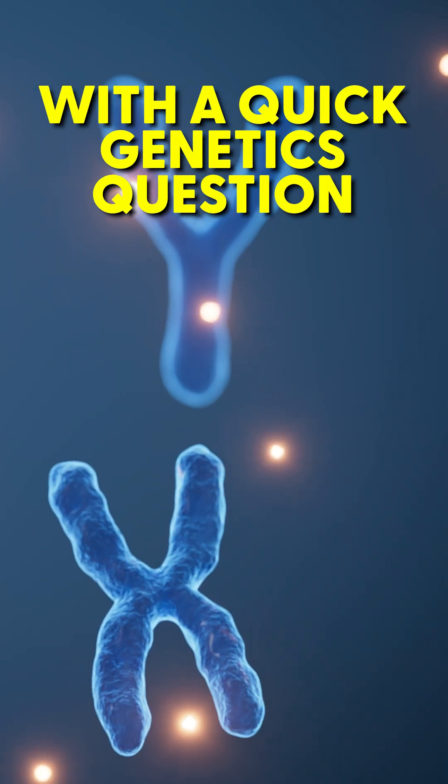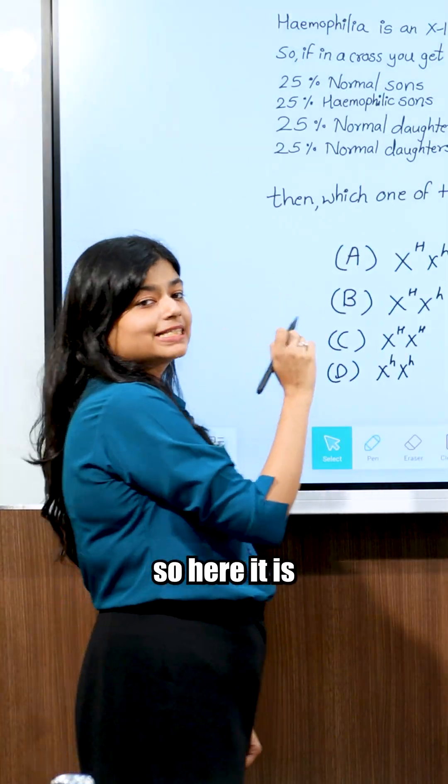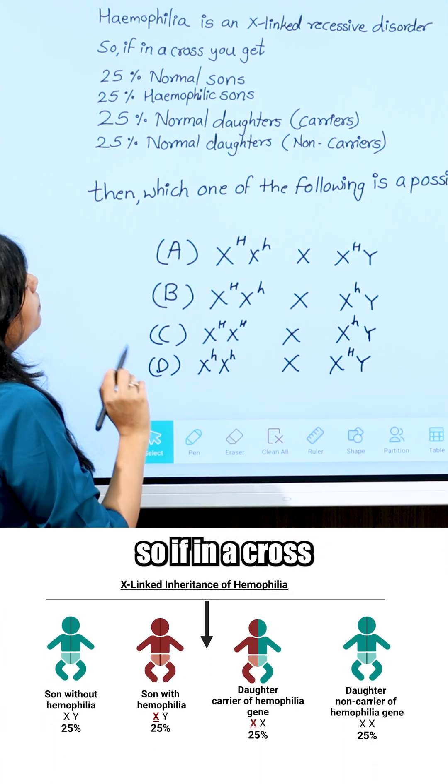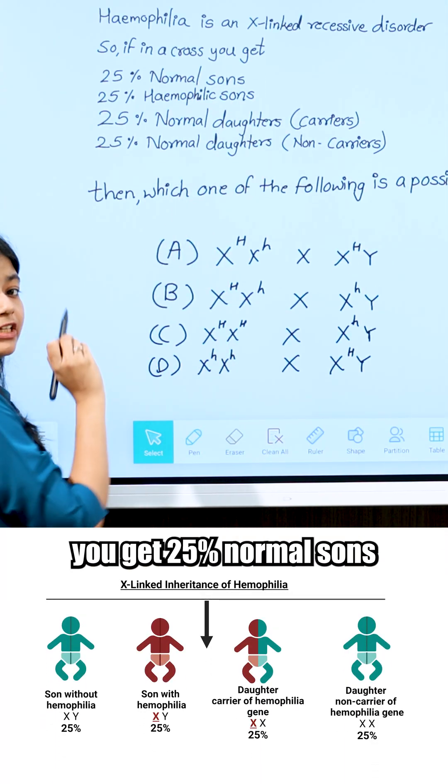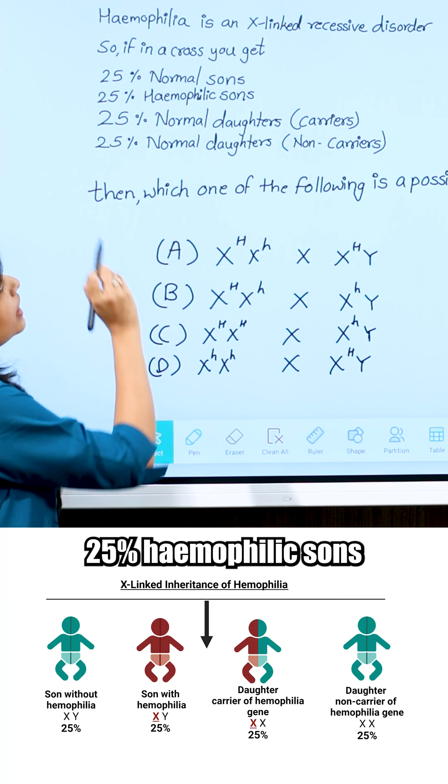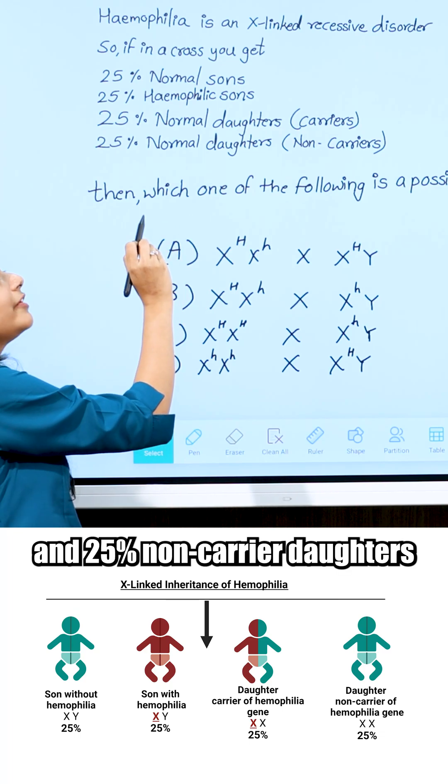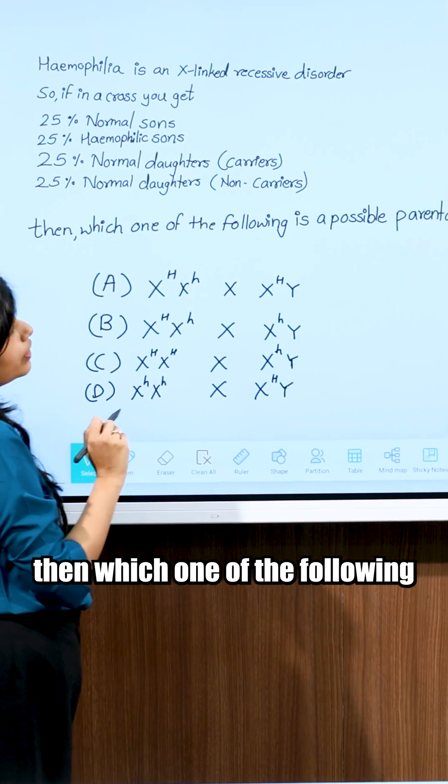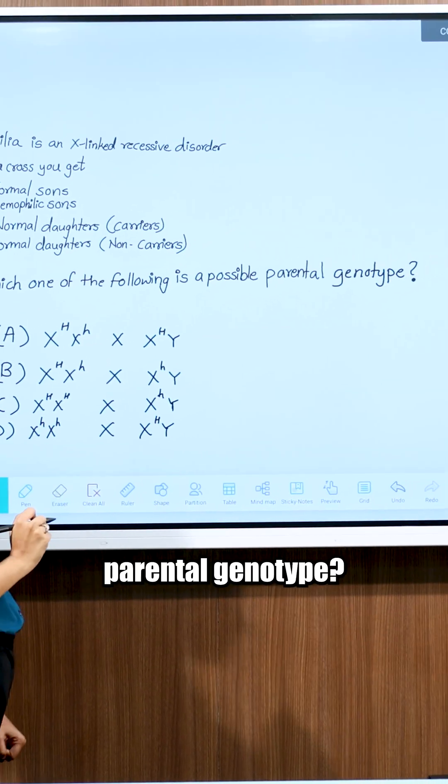Let me hit you with a quick genetics question. Ready? Haemophilia is an X-linked recessive disorder. So if in a cross you get 25% normal sons, 25% haemophilic sons, 25% normal carrier daughters and 25% non-carrier daughters, then which one of the following is the possible parental genotype?